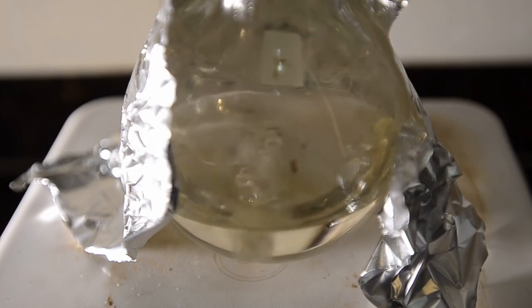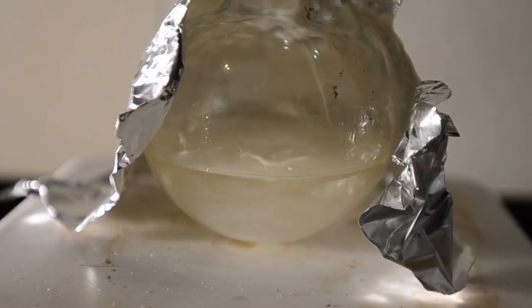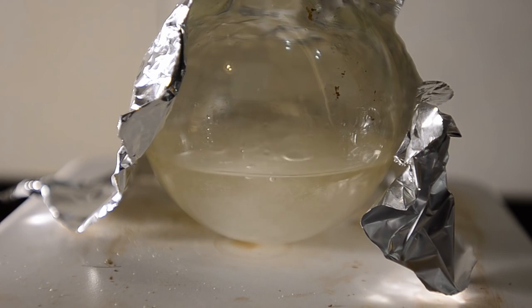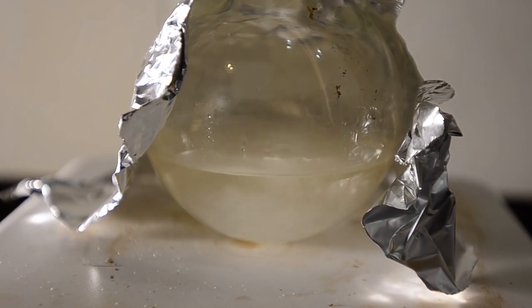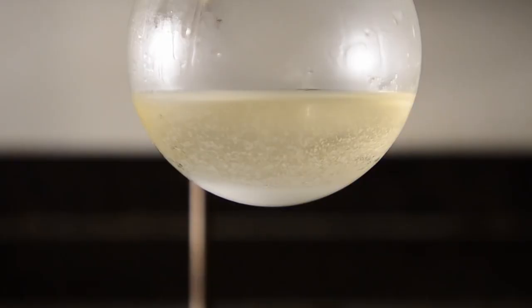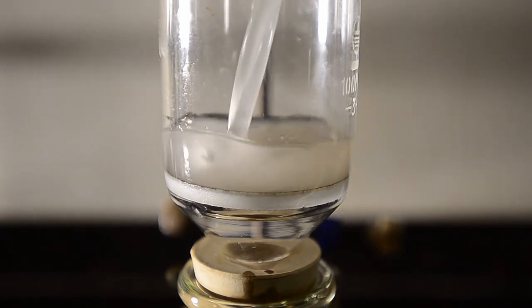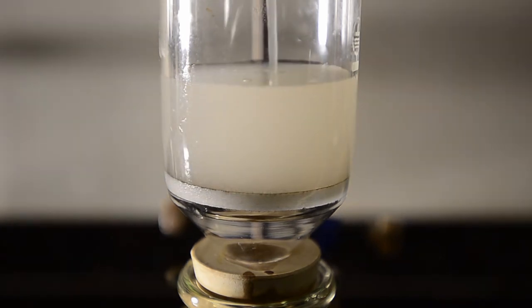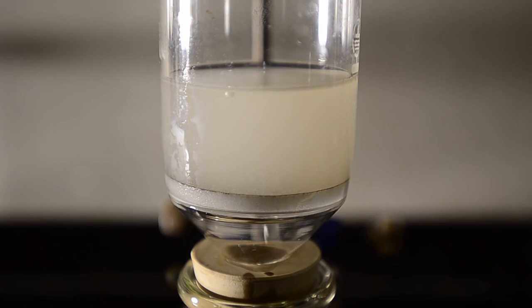At this point we noticed a white precipitate, presumably more sodium chloride, forming in the boiling flask. So we allowed the mixture to cool at this point and chilled it down again to zero degrees. Once again we filtered this on a vacuum and we noticed that the liquid was now actually quite viscous and syrupy.